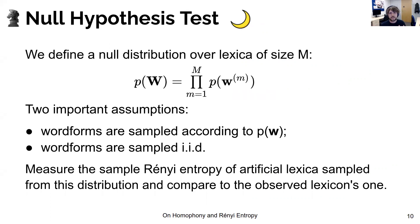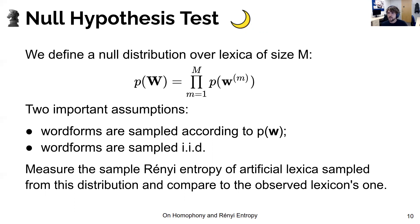To make this more concrete, we also define a hypothesis test which relies on a new distribution over lexica of size m, P(W). This distribution has two important assumptions: first, that word forms are sampled according to the phonotactic distribution P(w); and second, that word forms are sampled IID. We can then measure the sample Rényi entropy of artificial lexica sampled from this distribution and compare it to the observed lexicon's value as a hypothesis test. This is described in more detail in the paper.